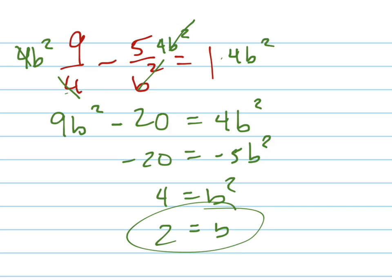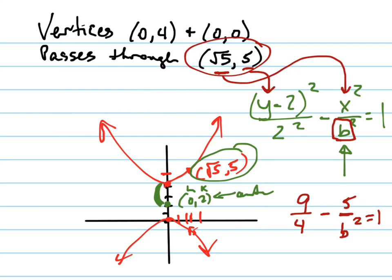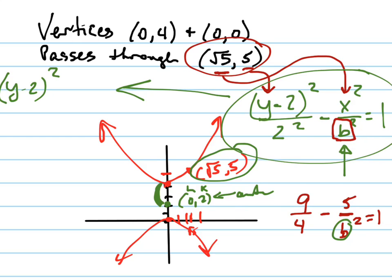Technically, plus or minus 2, but it's really 2. So what is b right here? 2. And what's b²? 4. And so what's my equation? There's my equation. Let's write the final answer over here. (y - 2)² all over 4 minus x² all over 4 equals 1. There's your equation.